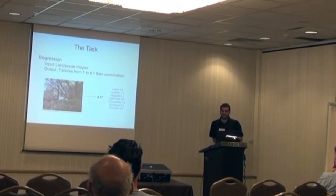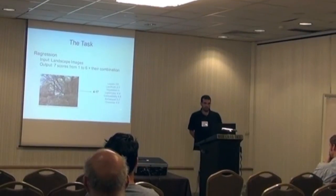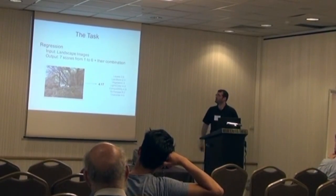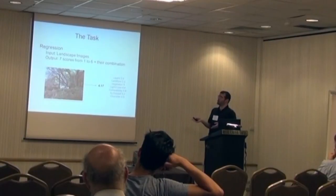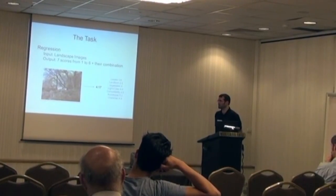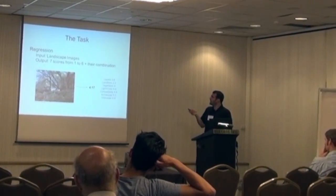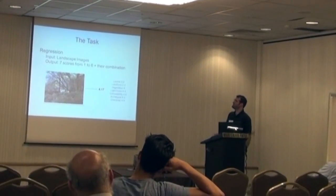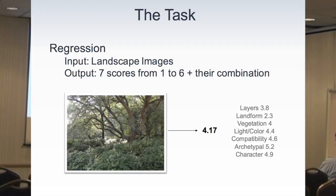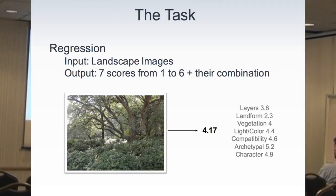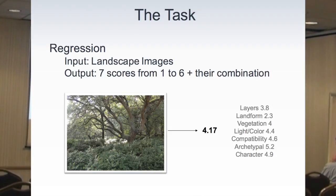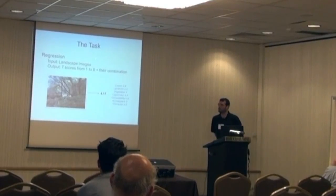What is the computer task? It's a regression problem. We have landscape images, and we want to get an output of seven scores from one to six, plus the combination — so eight different scores in total. For example, looking at this image, the average scores from the experts are: layers at 3.8, landform at 2.3, vegetation at 4, light and color at 4.4, and so forth, to an average of 4.7 for this landscape scenery.